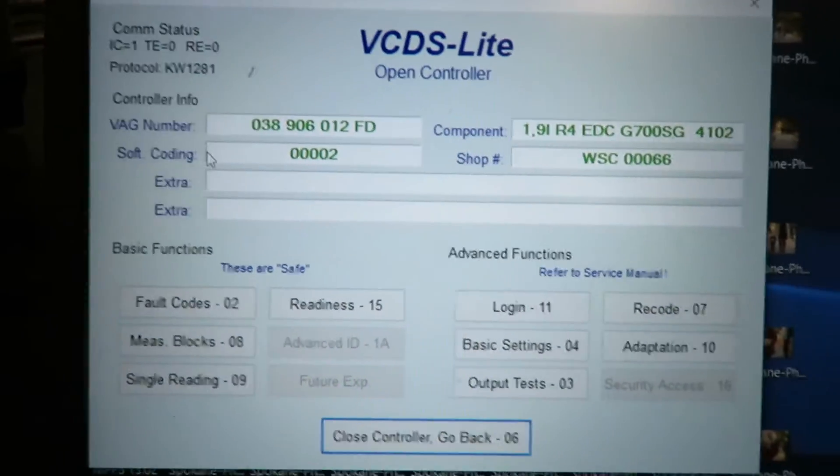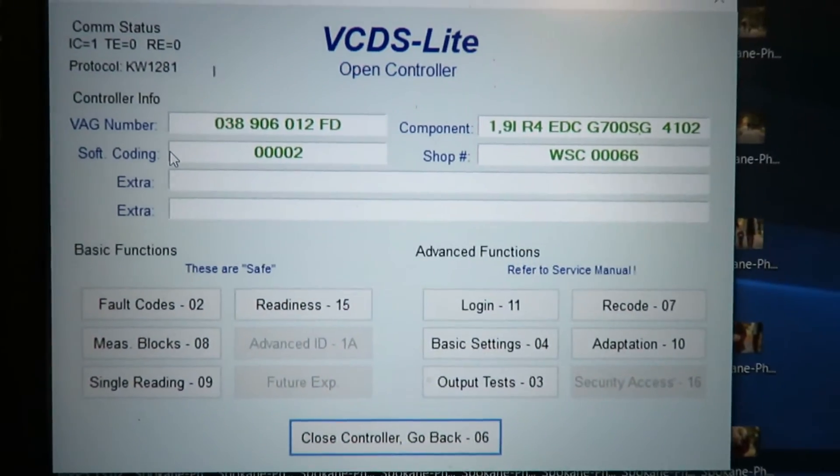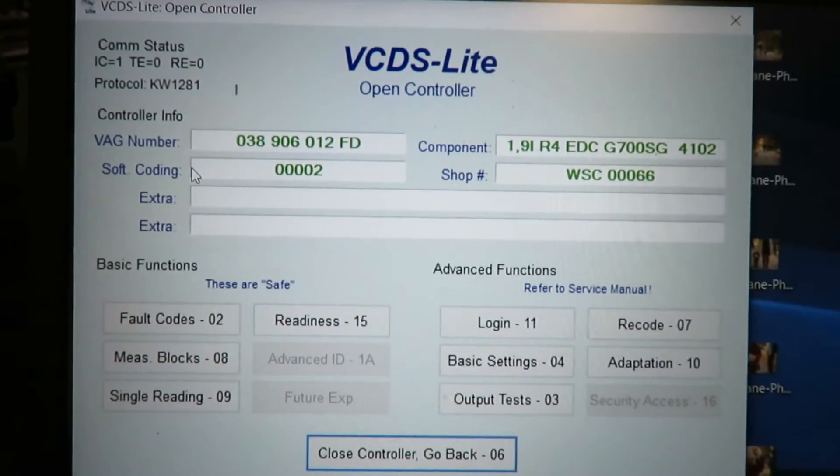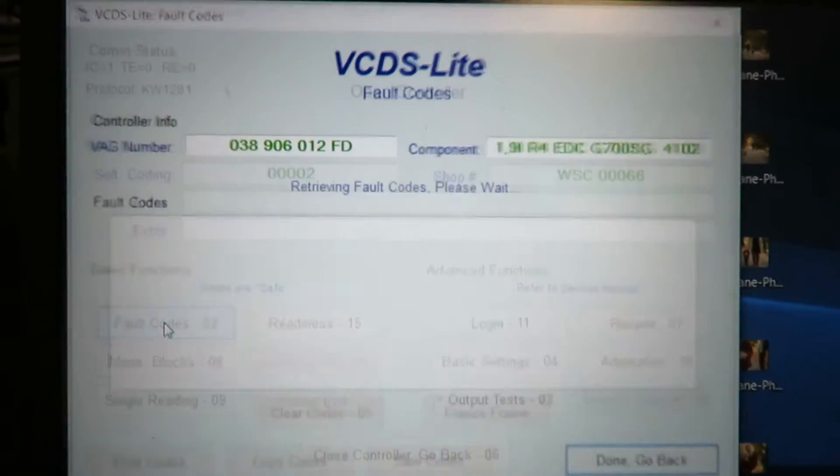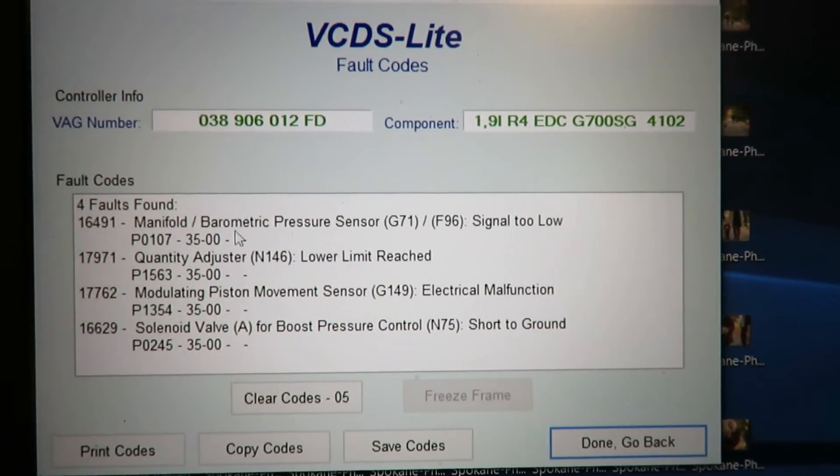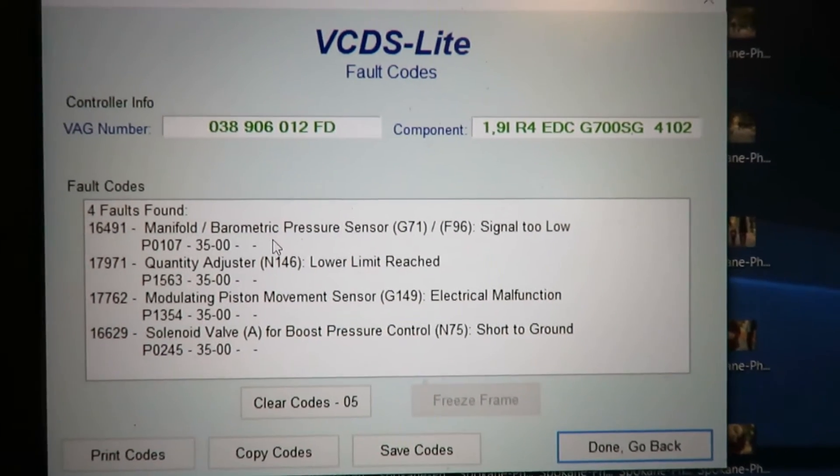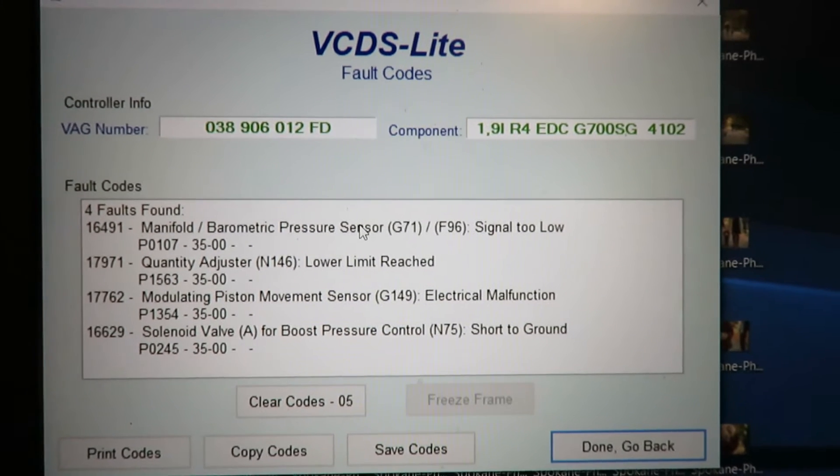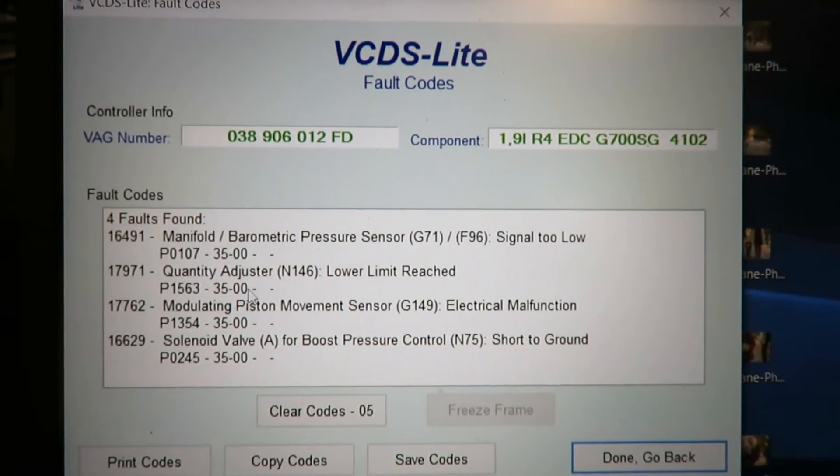Hey, look at that! So ECU definitely has power, we're into it. Let's see if it's got any codes. Barometric pressure - I think that's my MAF, I don't have that plugged in. Quantity adjuster - I'll have to check those.